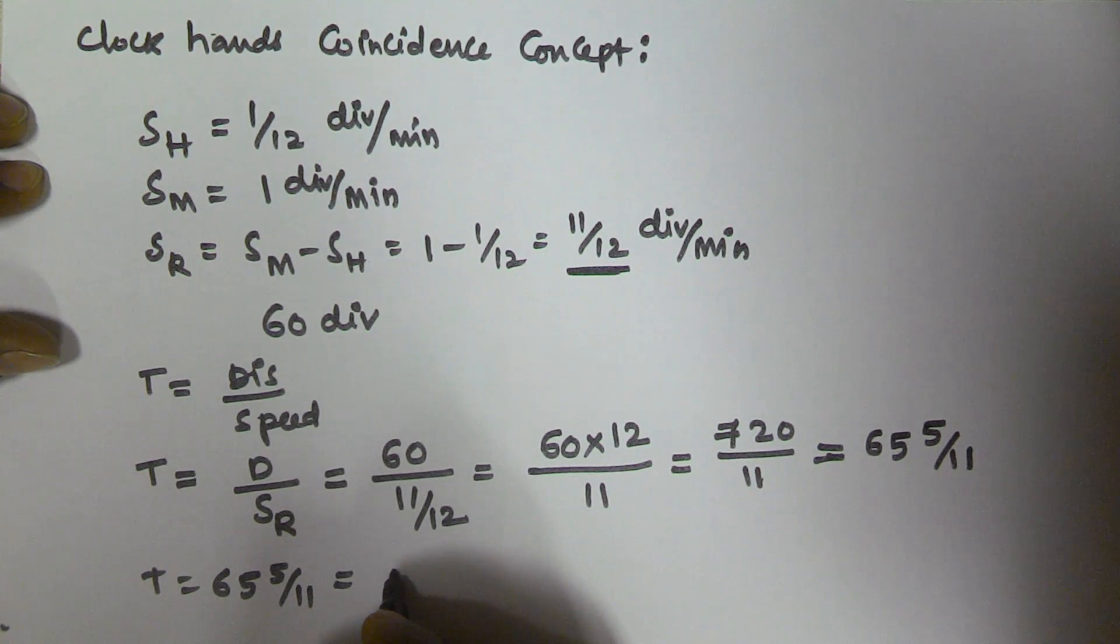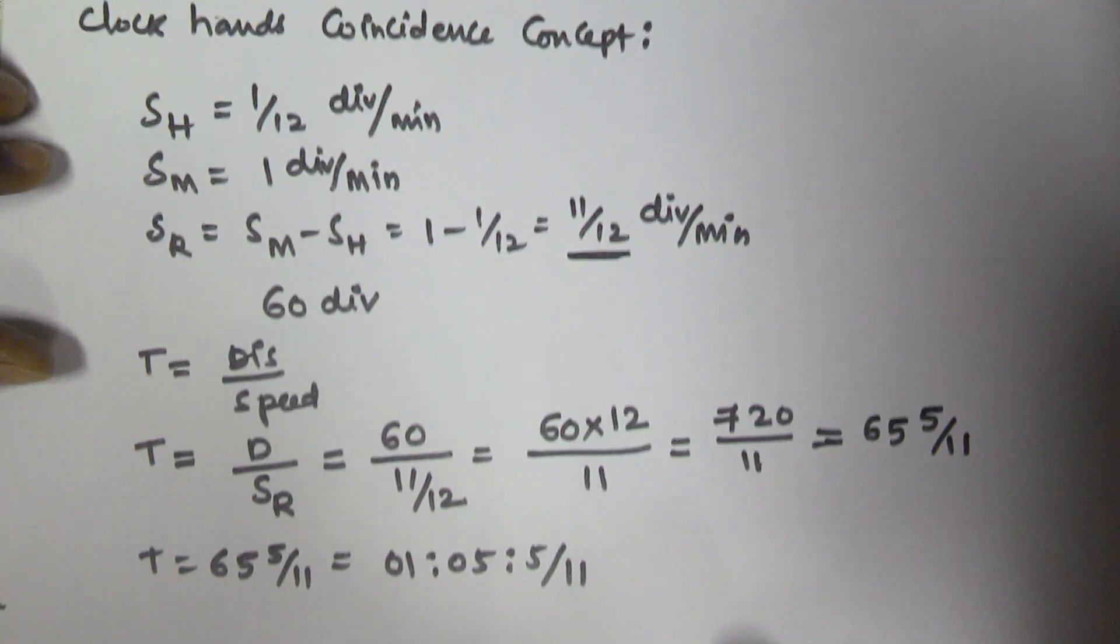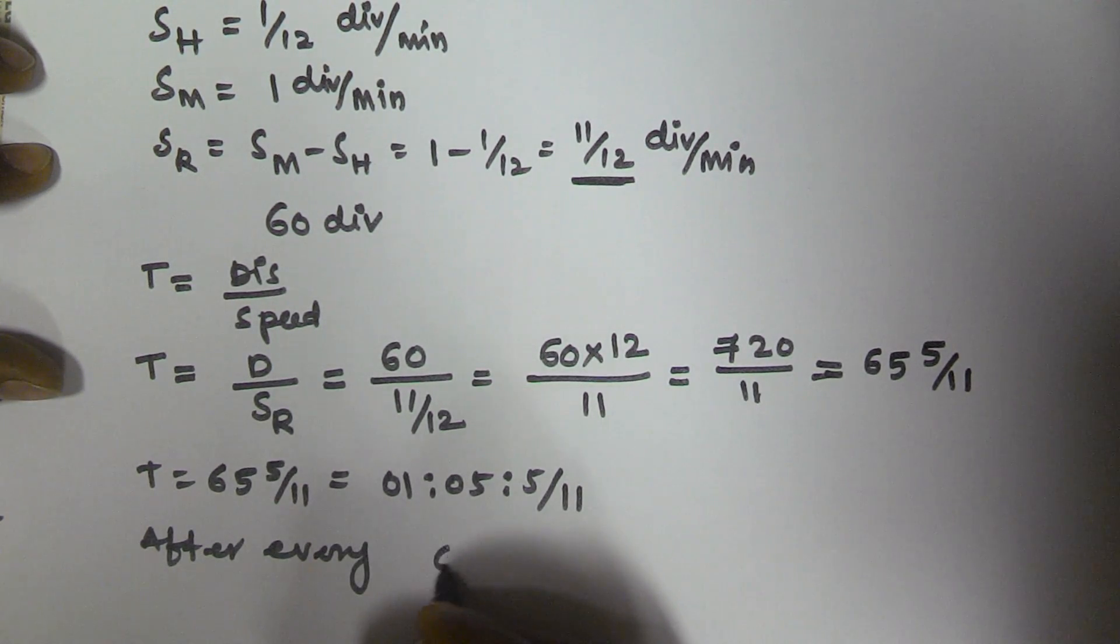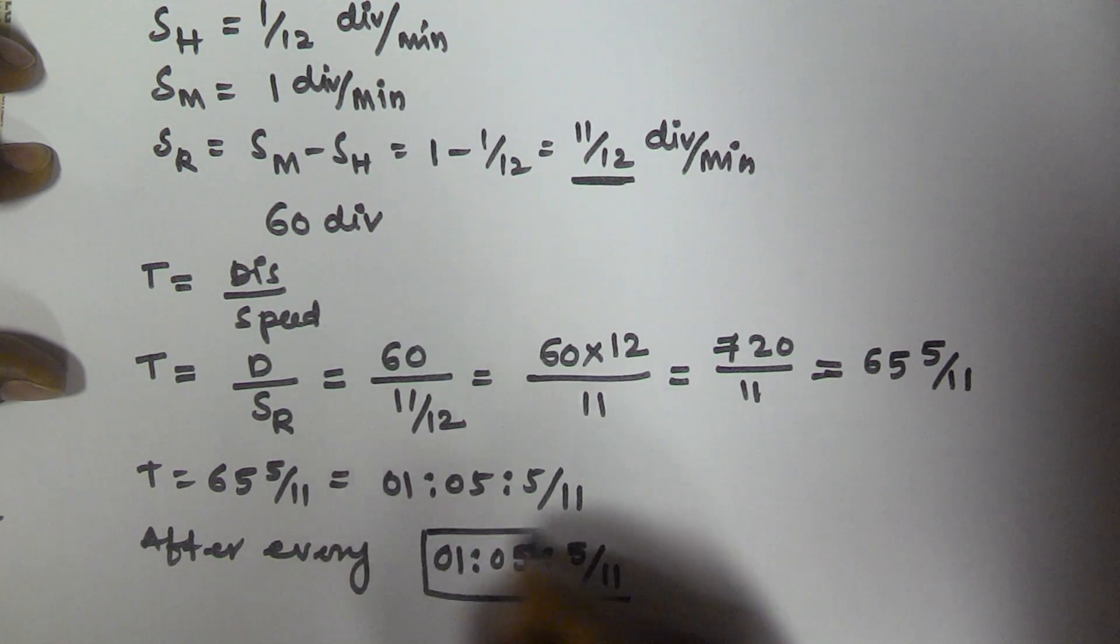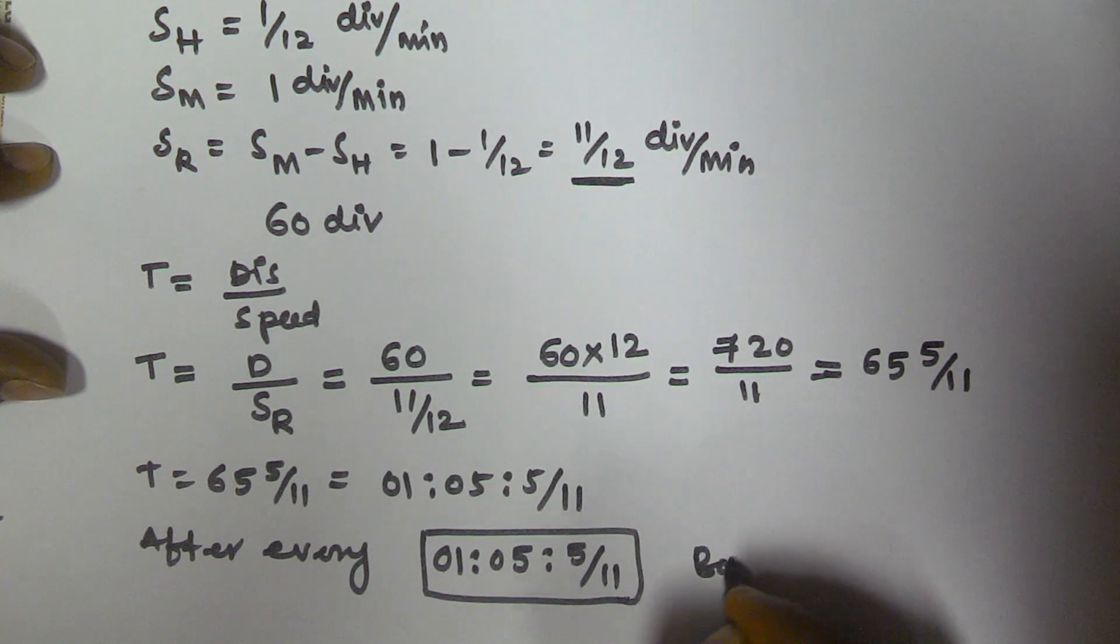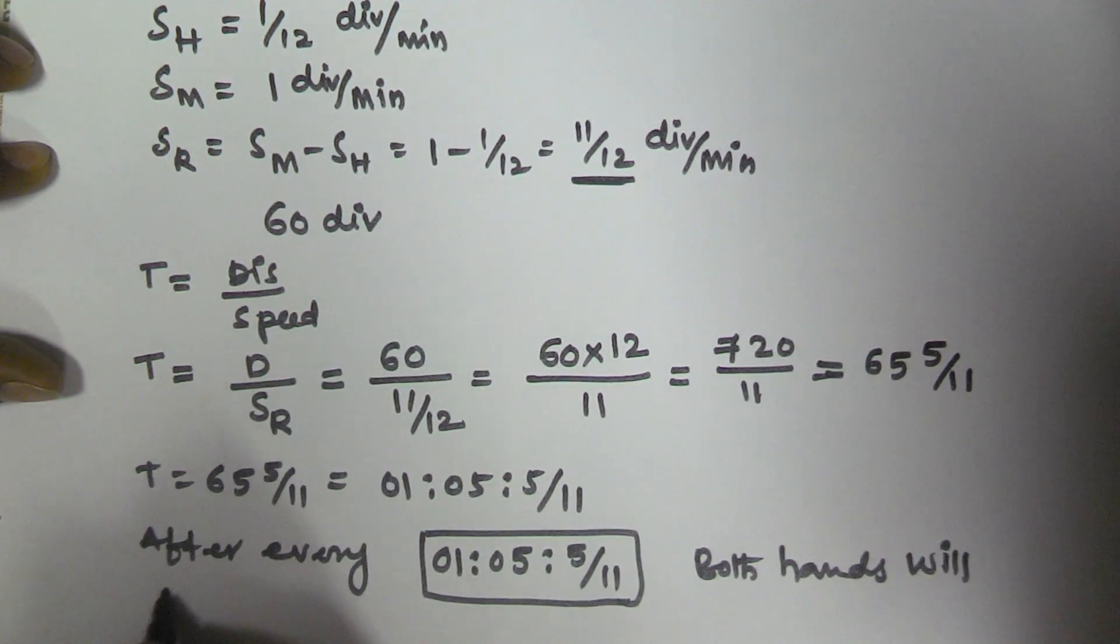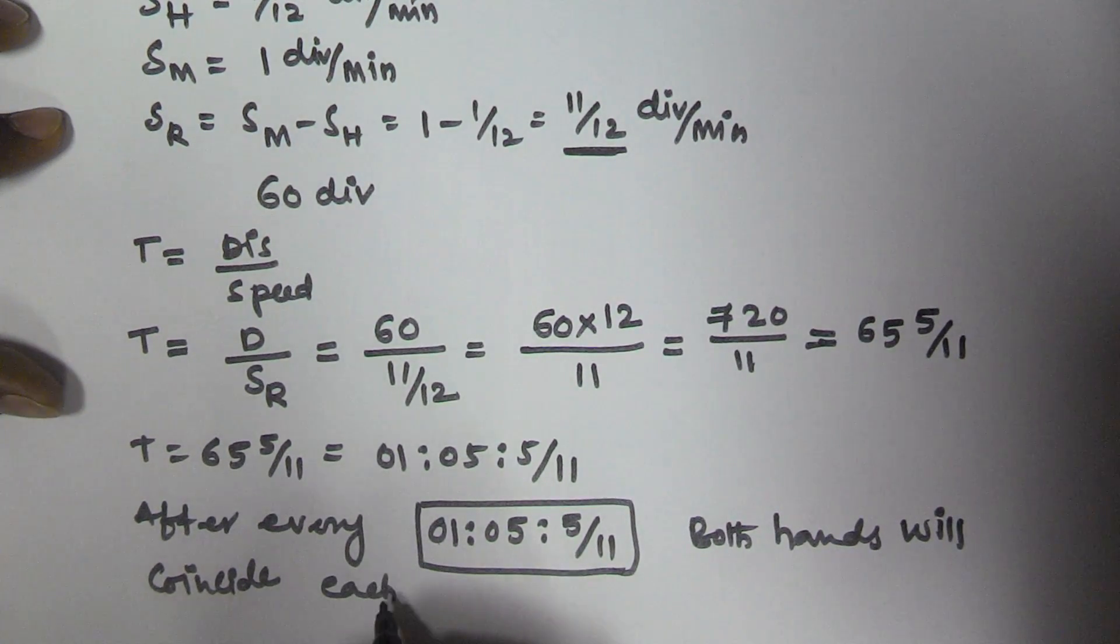This is equivalent to 1 hour 5 minutes 5 by 11 seconds. So that means after every 1 hour 5 minutes 5 by 11 seconds, both hands will coincide each other.